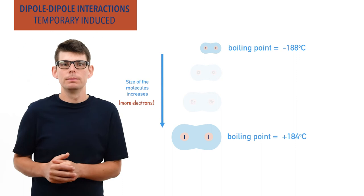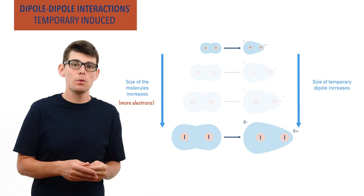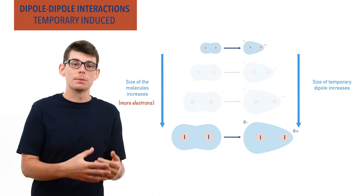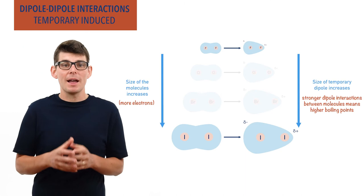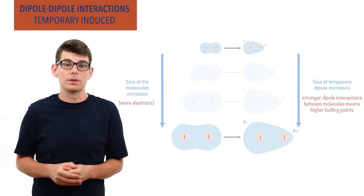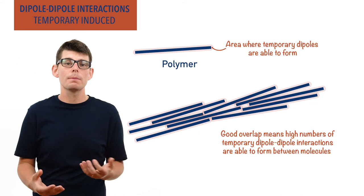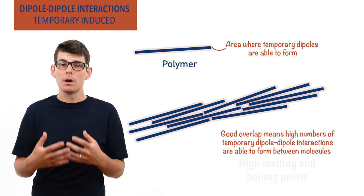As fluorine is much smaller than iodine, the temporary dipoles it can form are much smaller, giving weaker temporary induced dipole-dipole interactions between molecules that are easier to break. The iodine molecules are much larger, and this means the temporary induced dipole-dipole interactions between them are much stronger, require more energy to overcome, and this gives iodine a much higher boiling point. For very large molecules like polymers and plastics, the massive area of contact between molecules means huge numbers of temporary induced dipole-dipole interactions can form at any one time, giving them high melting and boiling points.